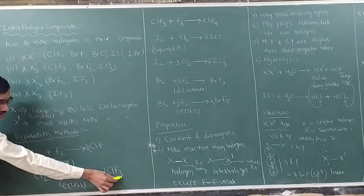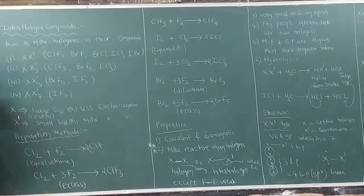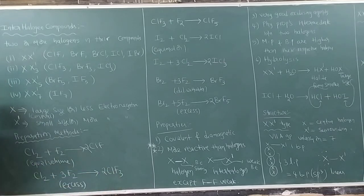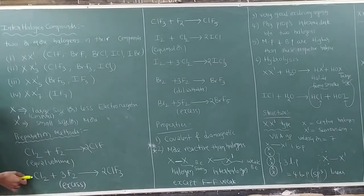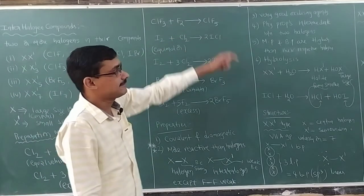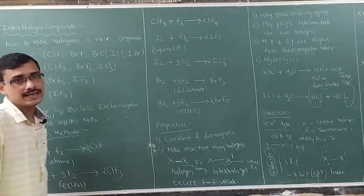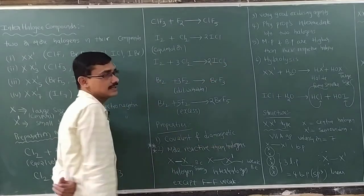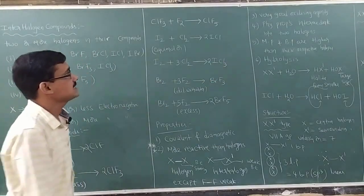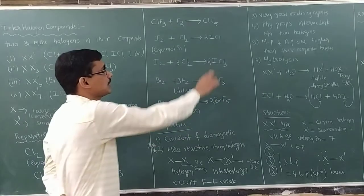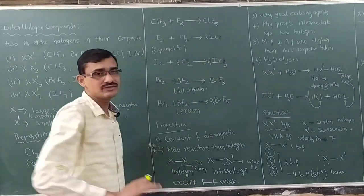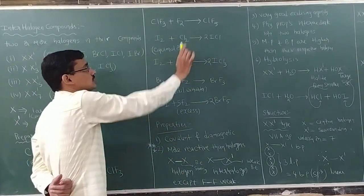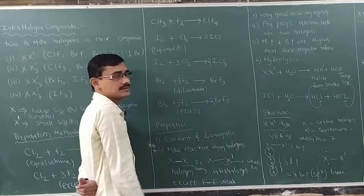Taking three moles of fluorine gives us ClF3. To get ICl, you take one mole of iodine and one mole of chlorine — that gives two moles of ICl. For ICl3, you take one mole of iodine and three moles of chlorine.